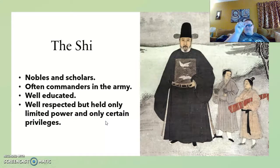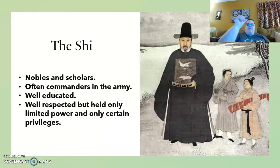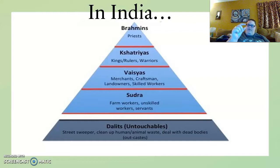The next step down is the Xi — these were nobles and scholars. They were often commanders in the army, well educated and well respected, but held only limited powers and privileges. Notice that in China it goes emperor and then nobles and scholars, whereas in India it went priests and scholars first, and then rulers and warriors. So those are flipped — that's a difference. Go ahead and write it down.